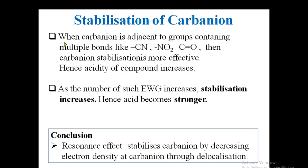Always remember: resonance stabilizes carbanions through delocalization. When a carbanion is adjacent to groups containing multiple bonds — cyanide, nitro, carbonyl — stabilization is more effective. As the number of such electron-withdrawing groups attached to the carbon increases, stabilization also increases and the compound becomes a stronger acid. Conclusion: resonance stabilizes carbanions by decreasing electron density through delocalization.